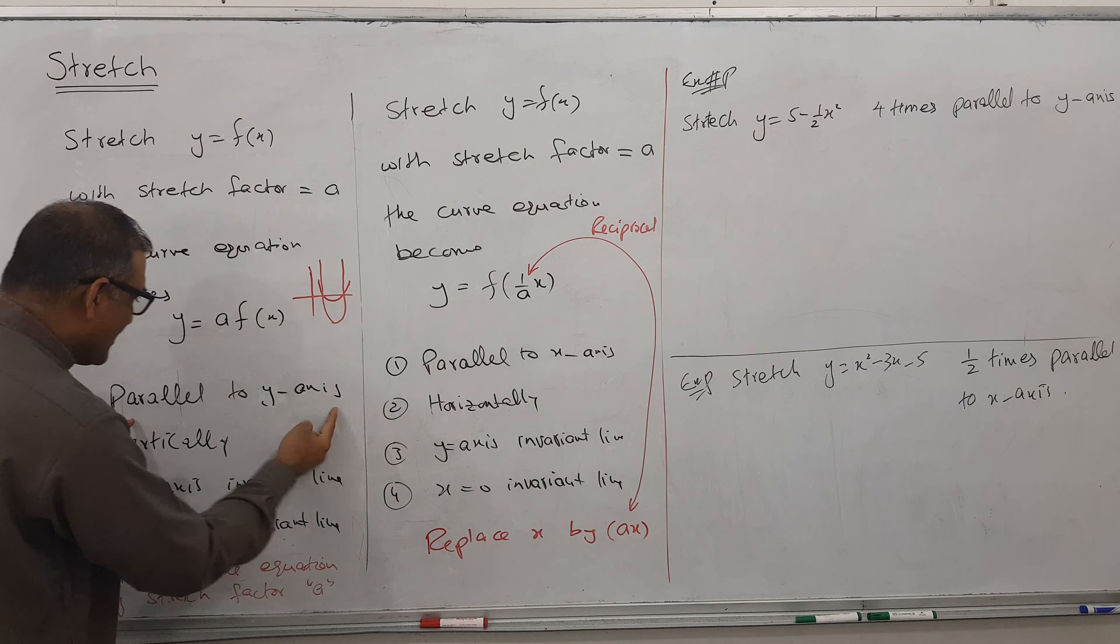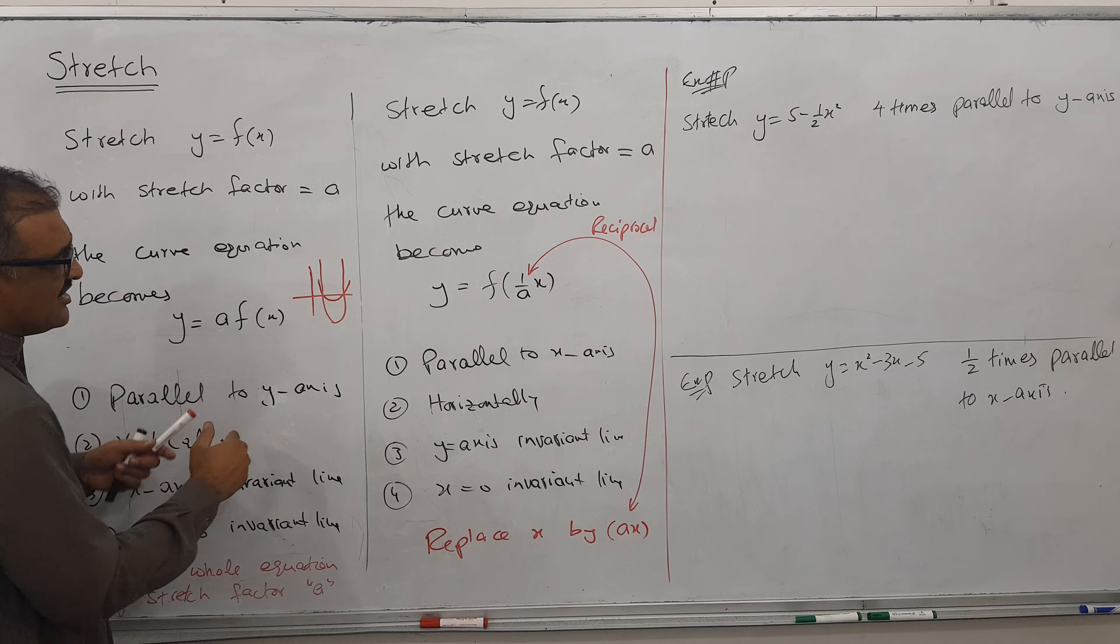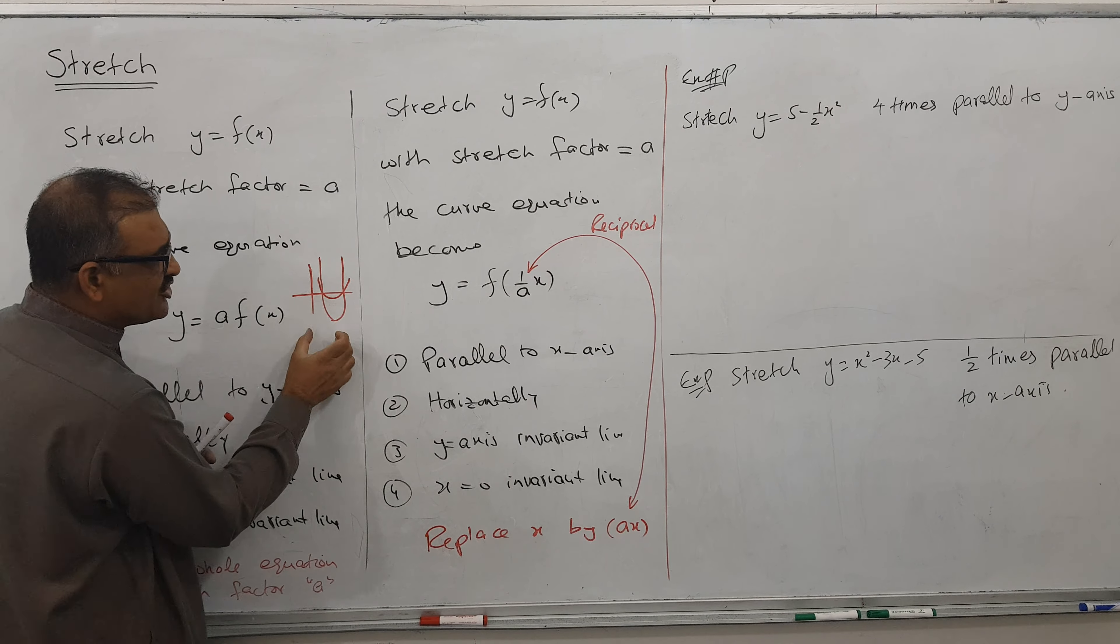He can use the word x-axis invariant line because x values will not change in this kind of question. Or y = 0 is also the same thing, y = 0 invariant line. So both are same.